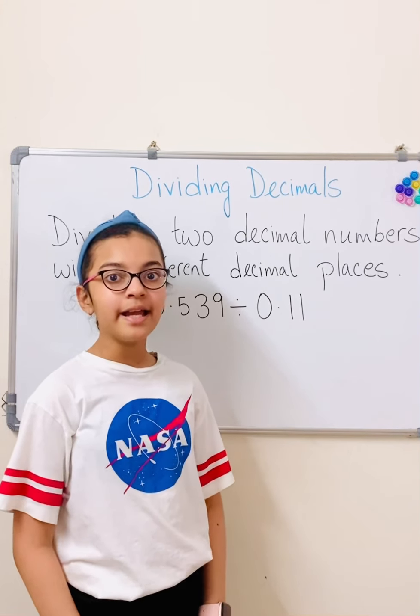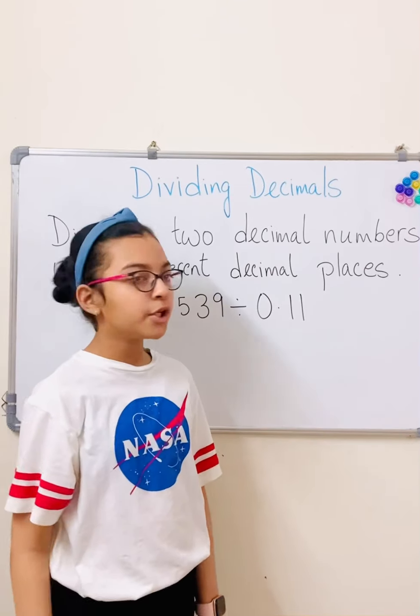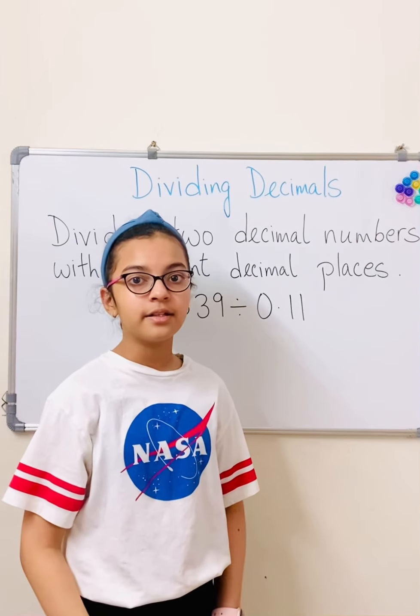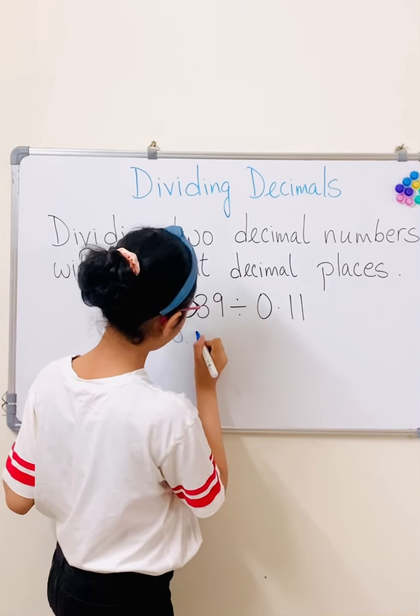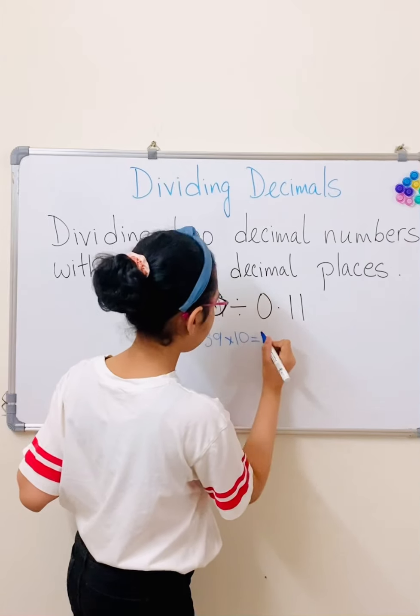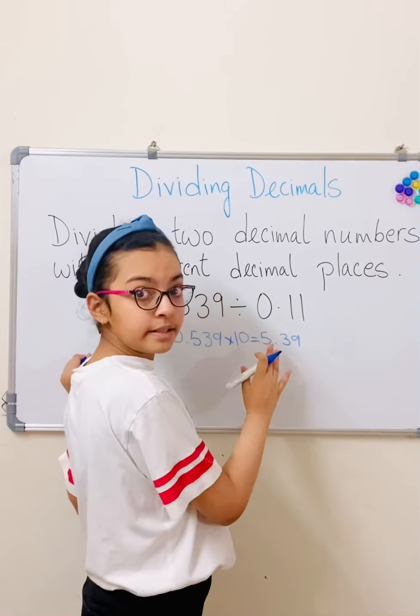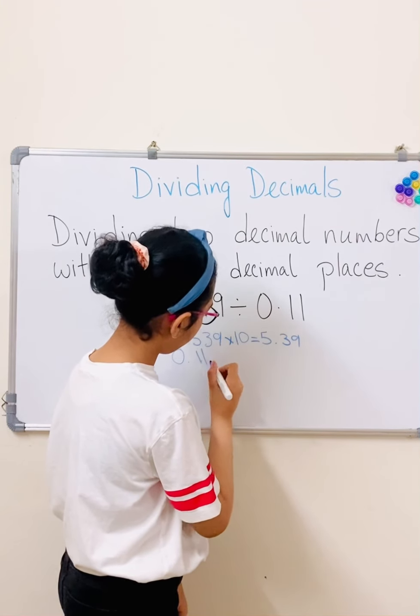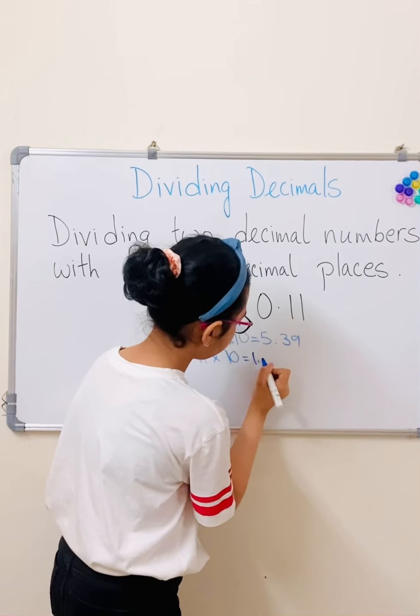Okay guys, so here's another rule. Dividing two decimal numbers with different decimal places. So as you can see, we have three decimal places here and two here. So now let's do the same rule. Multiply until you get whole numbers. So we do 0.539 into 10. And that will equal to 5.39. Now we're not done here, but I'll just show you this. So we write 0.11 into 10. And that equals to 1.1.